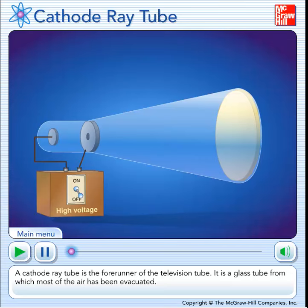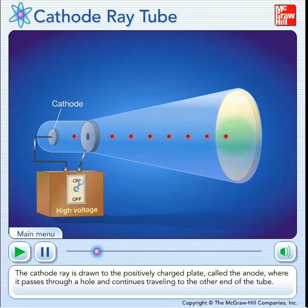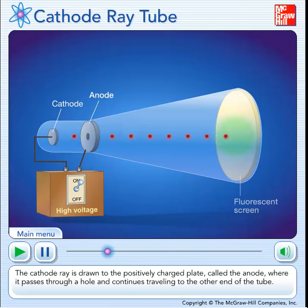A cathode ray tube is the forerunner of the television tube. It is a glass tube from which most of the air has been evacuated. When the two metal plates are connected to a high voltage source, the negatively charged plate, called the cathode, emits an invisible ray. The cathode ray is drawn to the positively charged plate, called the anode, where it passes through a hole and continues traveling to the other end of the tube.